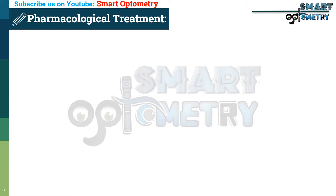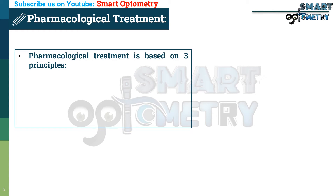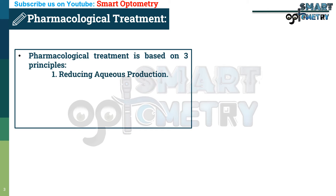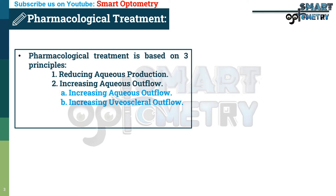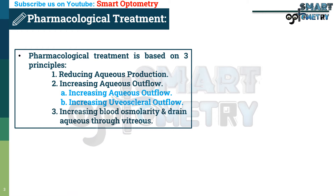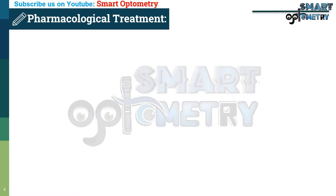Pharmacological treatment is based on three principles: one, reducing aqueous production; two, increasing aqueous outflow, which can be achieved by increasing aqueous outflow and increasing uveoscleral outflow; and three, increasing blood osmolality to drain aqueous through the vitreous.